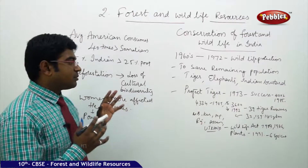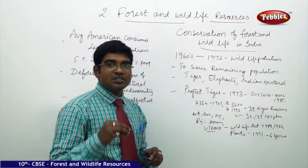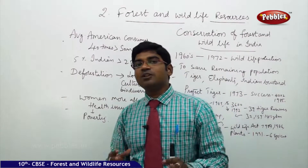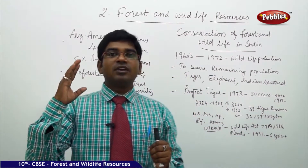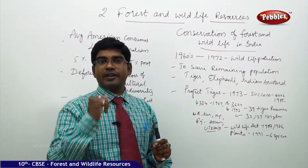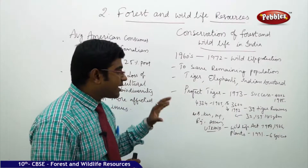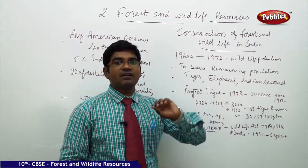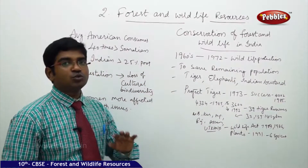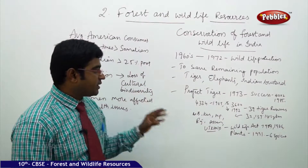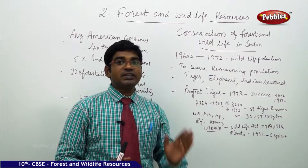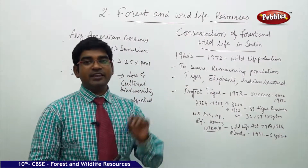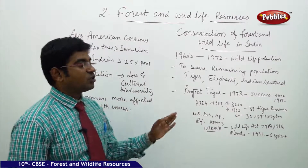Project Tiger 1973 was initiated because, by that time, the number of tigers available on Indian land had gone from thousands down to hundreds. Project Tiger was initially successful. In 1985, they registered 4,002 tigers. In 1989, it went up to 4,334. But astonishingly, in 1993, the number came down to 3,600.